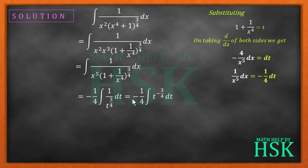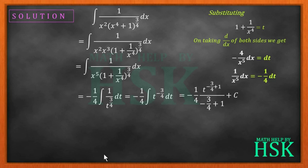This can be written as minus 1 upon 4 times the integration of t to the power of minus 3 by 4 with respect to t. On integrating I'm going to get this as equal to minus 1 by 4 times t to the power of minus 3 by 4 plus 1, upon minus 3 by 4 plus 1, plus c.